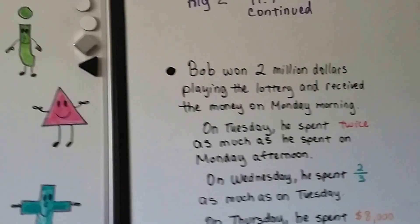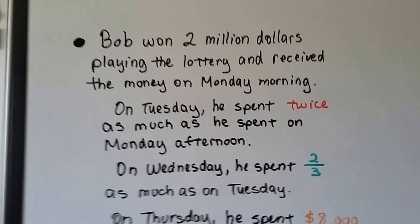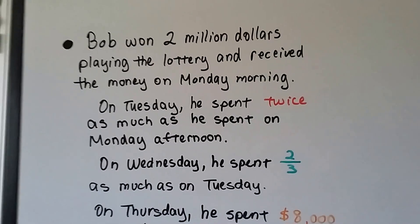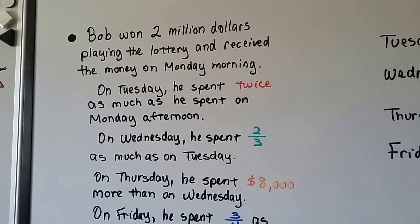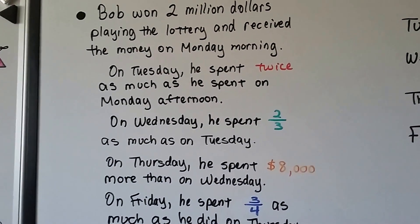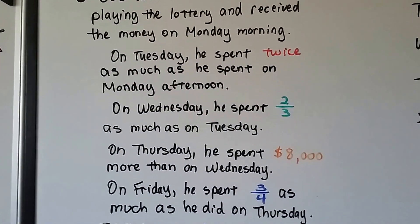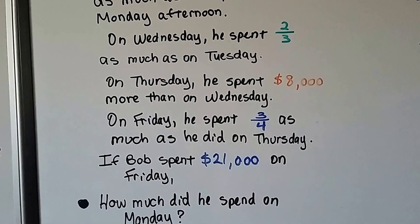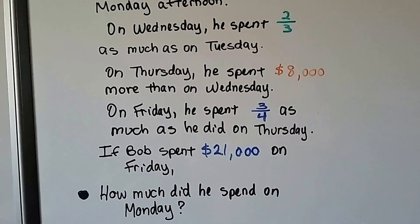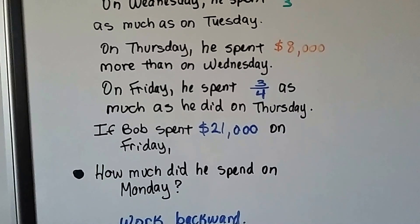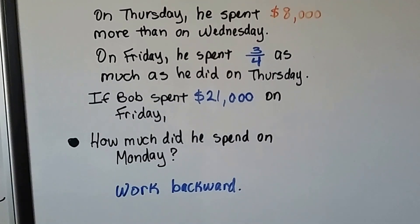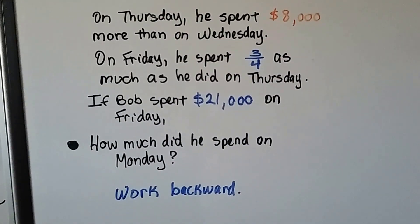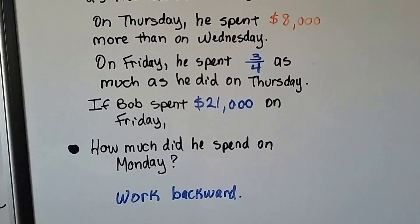Now let's do one that's a little more confusing. Bob won two million dollars playing the lottery and received the money on Monday morning. On Tuesday, he spent twice as much as he spent on Monday afternoon. On Wednesday, he spent two-thirds as much as on Tuesday. On Thursday, he spent 8,000 more than on Wednesday. On Friday, he spent three-fourths as much as he did on Thursday. And if Bob spent 21,000 on Friday, how much did he spend on Monday?